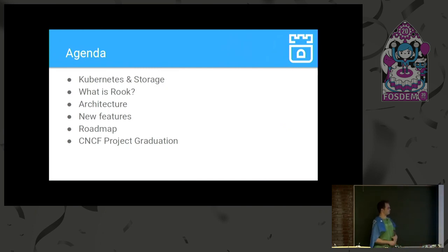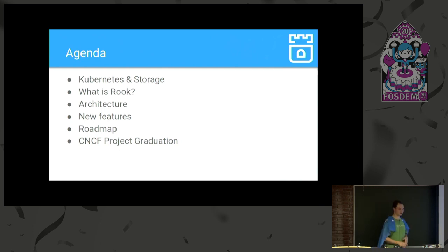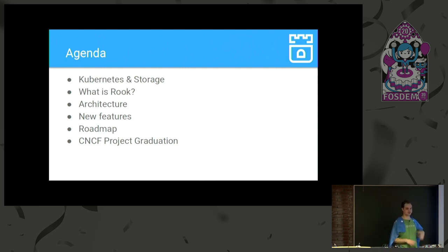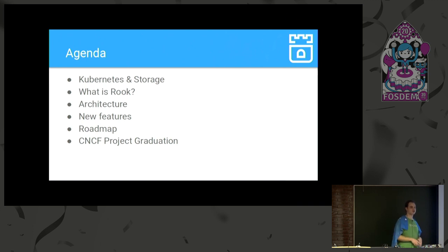Before jumping into the topics, here's a quick outline of what I'm going to talk about. First: Kubernetes and storage — a quick look at the current situation. Then: what is Rook? An overview. Then architecture, new features, and the roadmap for the future. We are also looking to graduate the project soon, so I'll talk about that as well.